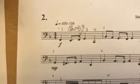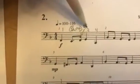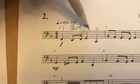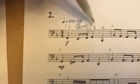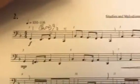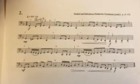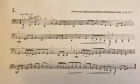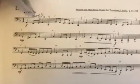Or if you were going to subdivide, you'd think: one, two-E-and-a, three, four. One, two-E-and-a, three, four. You've got these dotted eighth-sixteenths sprinkled all throughout this piece, but they're all going to be counted in that same way.